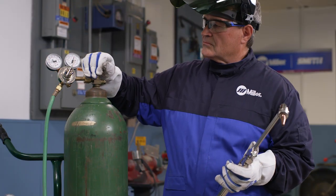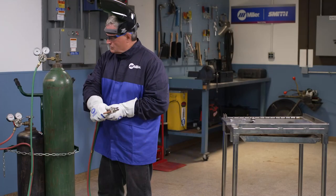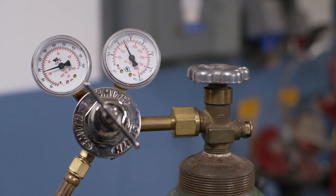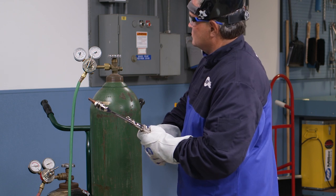After extinguishing the flame, close the cylinder valves and bleed the gases from the system. Drain the oxygen by opening the torch valve. Watch until both needles on the oxygen regulator gauges drop to zero, then be sure to close the torch oxygen valve.